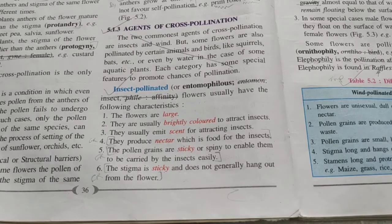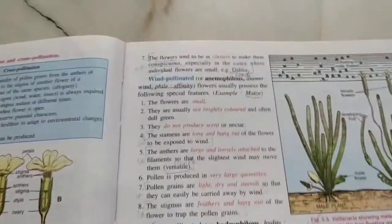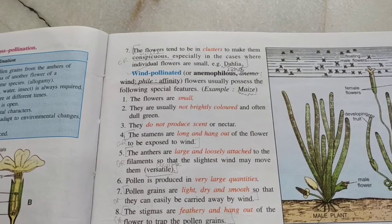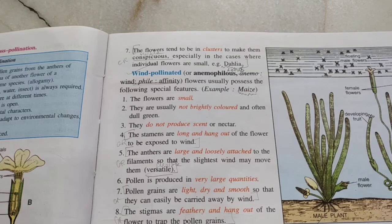Wind-pollinated flowers, also known as anemophilous flowers, have maize as an example. Lotus is an example of insect-pollinated flowers, not water-pollinated.